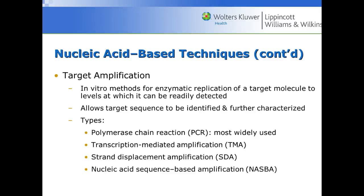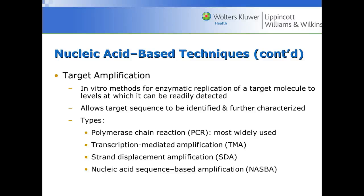Then we have target amplification — in vitro methods for enzymatic replication of a target molecule to levels at which it can be readily detected. This allows the target sequence to be identified and further characterized. The most widely used method is polymerase chain reaction, called PCR. There's also transcription-mediated amplification, strand displacement amplification, and nucleic acid-based amplification. PCR is what is most commonly used in laboratories today.